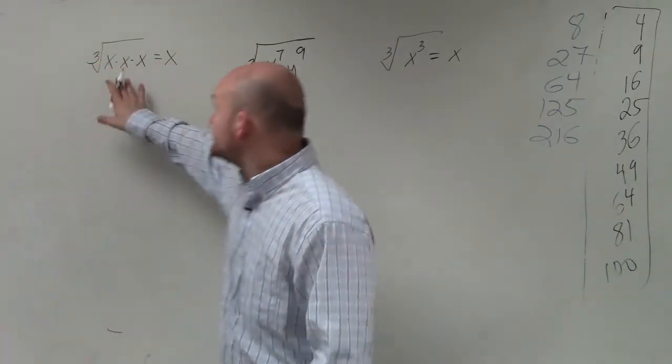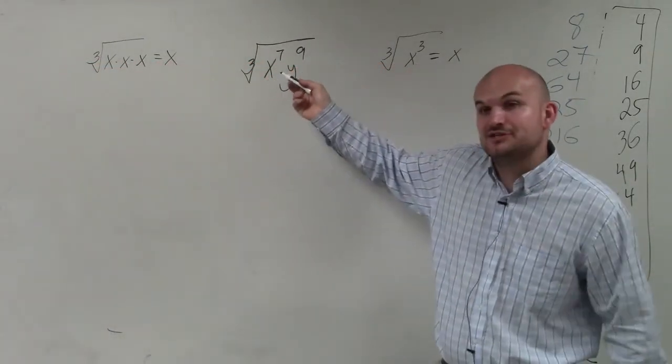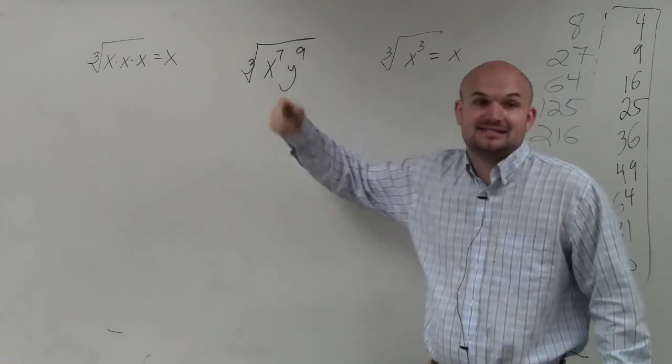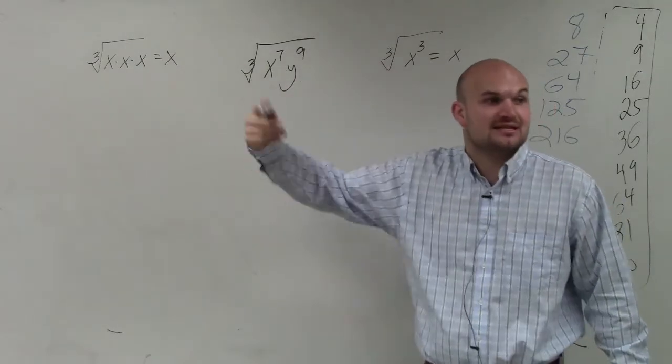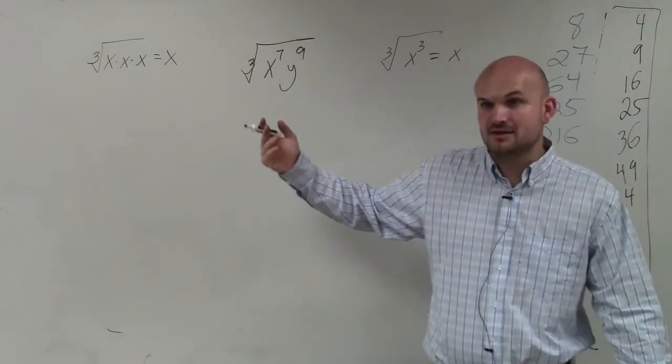But if you're going to look at it this way, then you've got to write out x to the seventh as x times x times x times x times x times x times x.